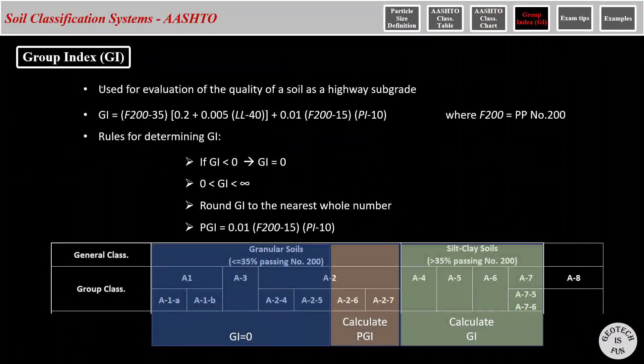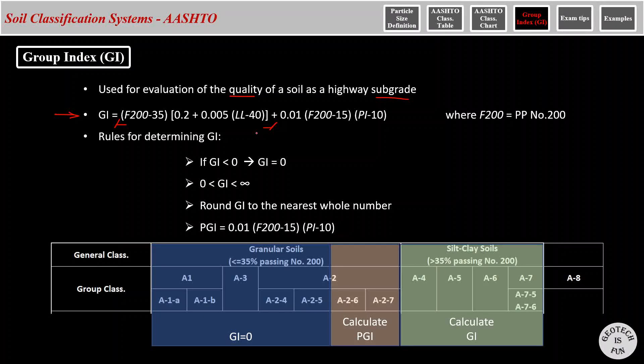And finally, group index, which is used for evaluation of the quality of the soil to be used as a highway subgrade. Here is the equation of the group index, which has two portions. The first one is called the partial group index determined based on liquid limit. And the second one is called the partial group index determined based on the plasticity index.